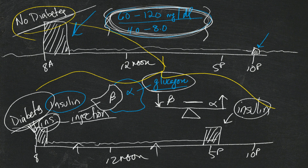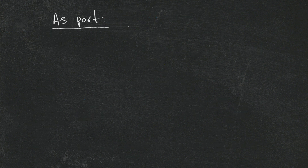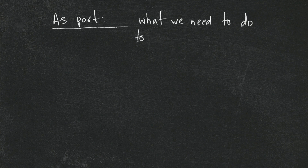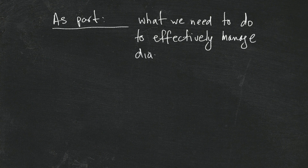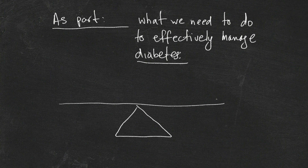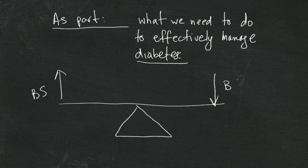Having diabetes means we have to try and mimic what the body does when we don't have diabetes. That is the big job, and that's what we're going to talk about now in terms of how we do that. As part of effectively managing diabetes and taking up the slack where the beta cells have left off is basically keeping things in balance. We have to learn what things make blood sugars go up, and try to keep a balance as best as possible to reach those target numbers.